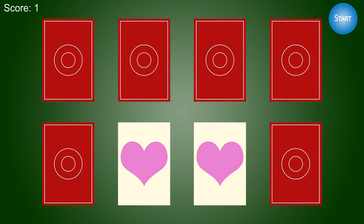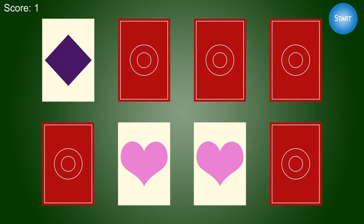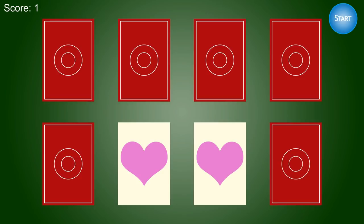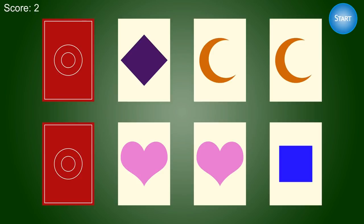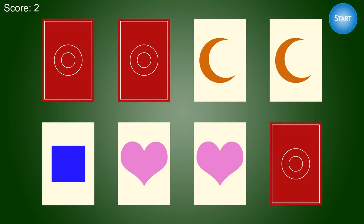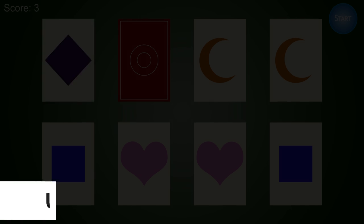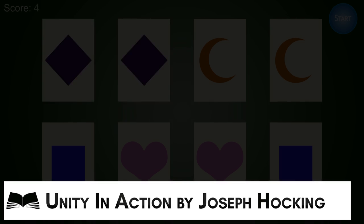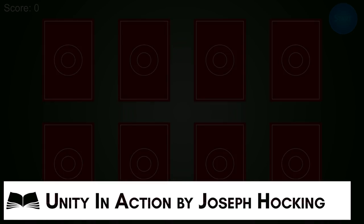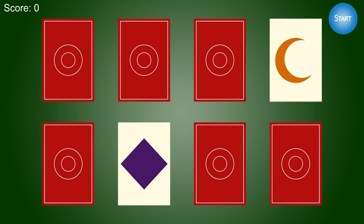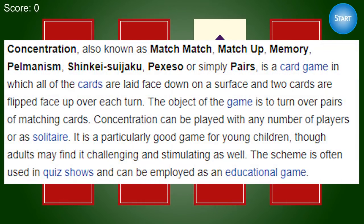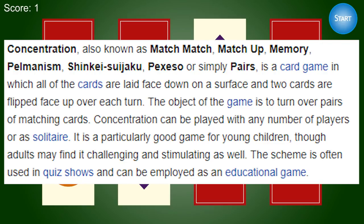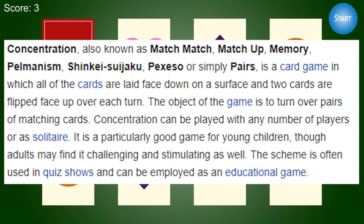Welcome to Book Club Tutorials, a show where I, Stephen Barr, take you through a tutorial based on or inspired by a book which I'm currently reading. This time we're looking at Unity in Action by Joseph Hawking. I will show you how to create a card game known as Pairs, or Concentration, or Match Match, or whatever you like to call it, but I'll be calling it Pairs.